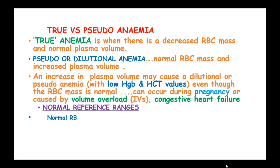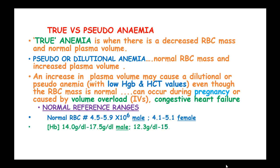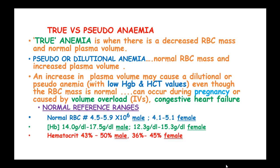The normal reference ranges: the normal red blood cell count should be 4.5 to 5.9 × 10⁶ in males and 4.1 to 5.1 × 10⁶ in females. Hemoglobin content should be between 14.0 g/dL to 17.0 g/dL in males. Hematocrit is 43 to 50% in males and 36 to 45% in females.